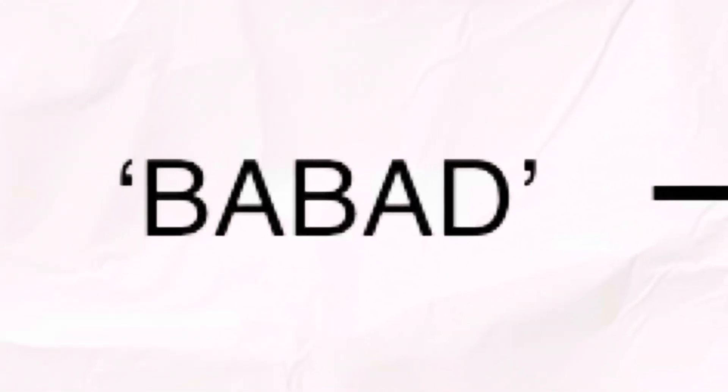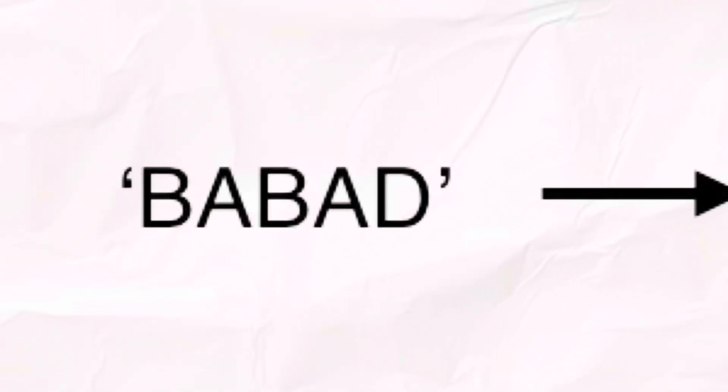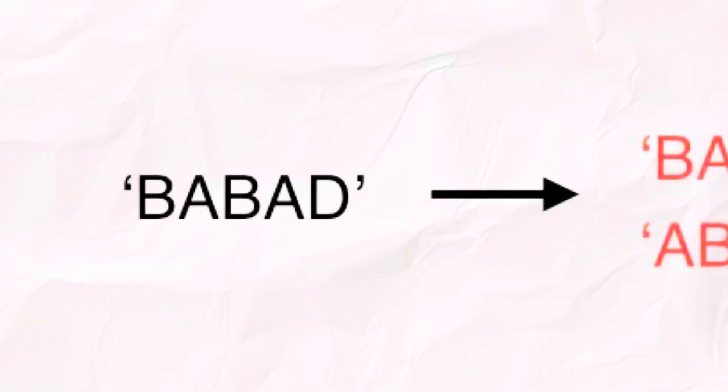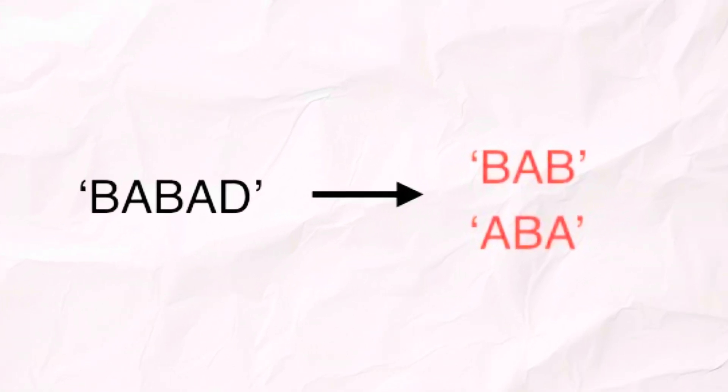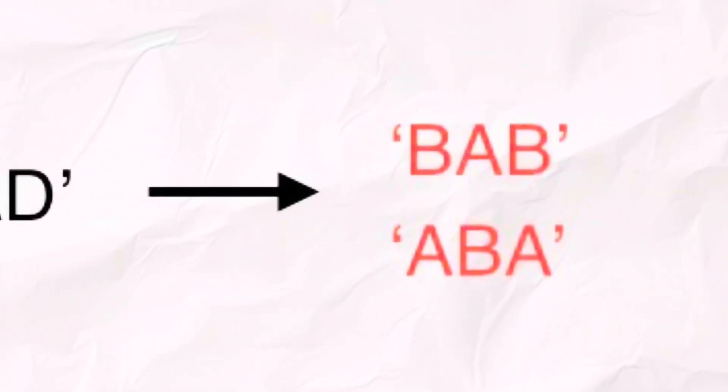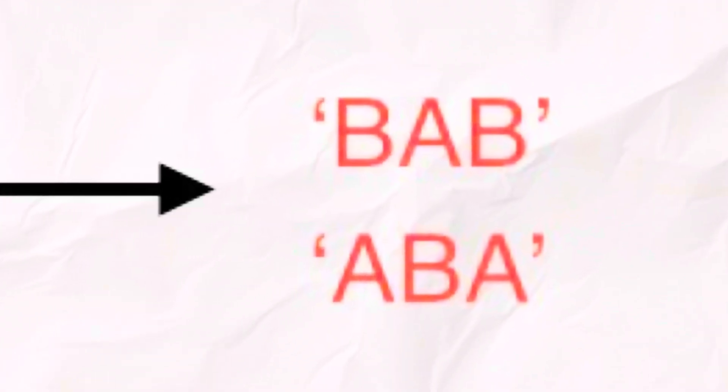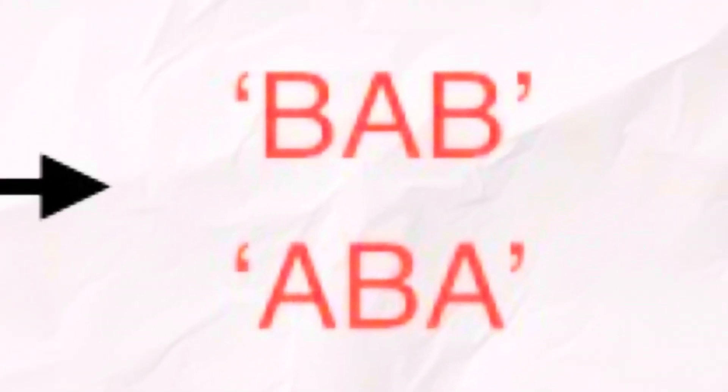So above all, the problem is that we are given a string like b-a-b-a-d. We want to find the longest substring that reads the same forward and backward. In this case, as you can see, b-a-b and a-b-a are both valid answers.